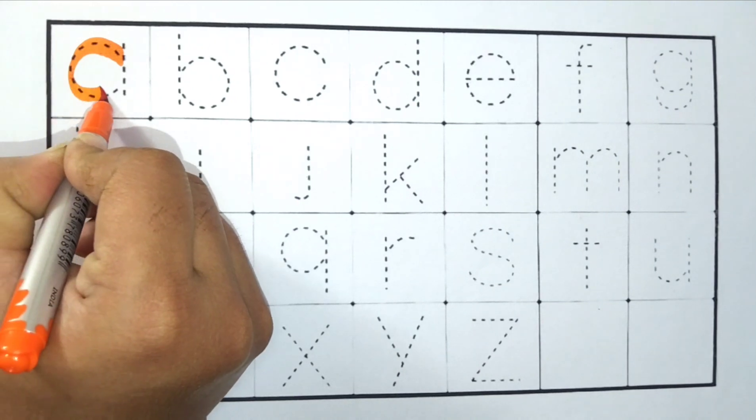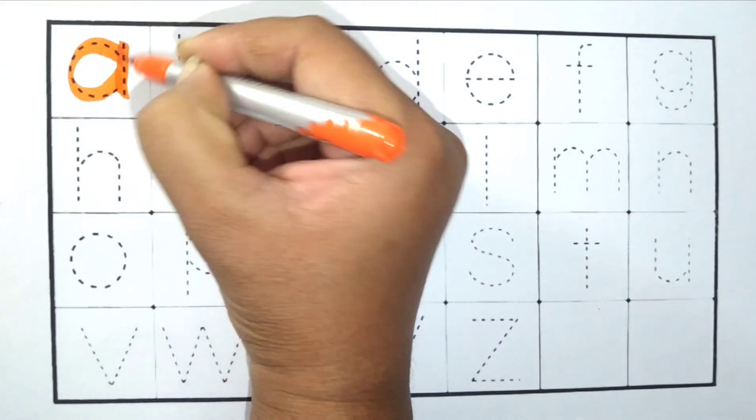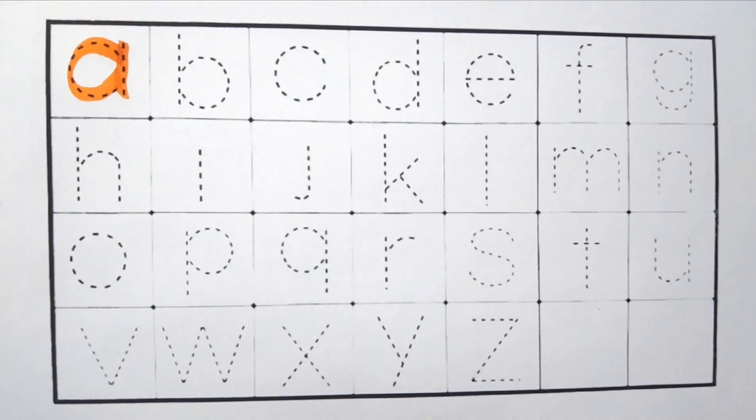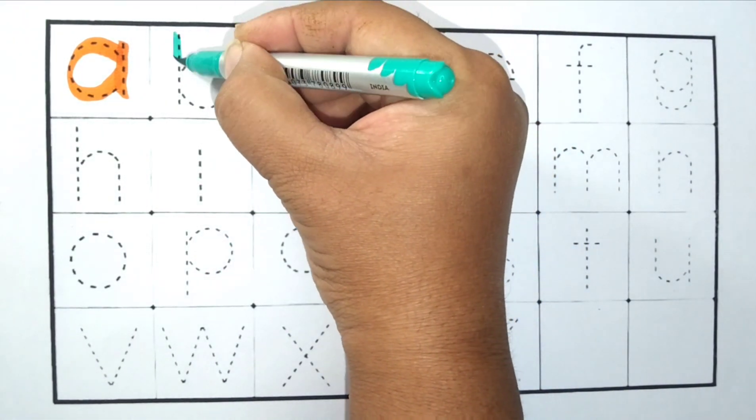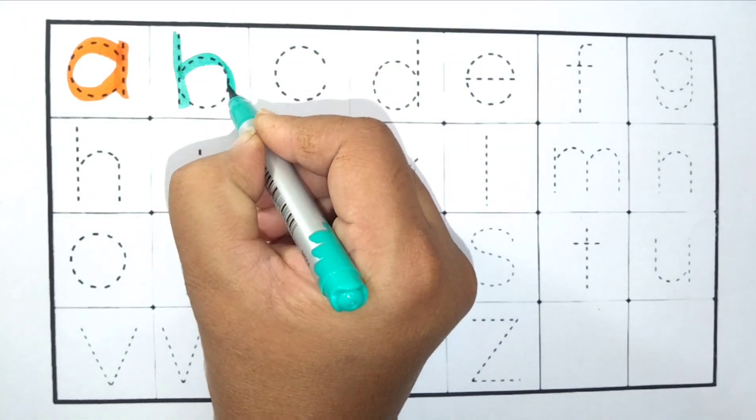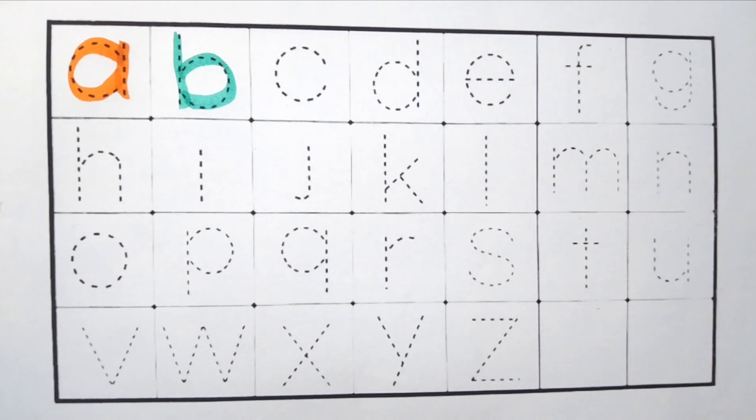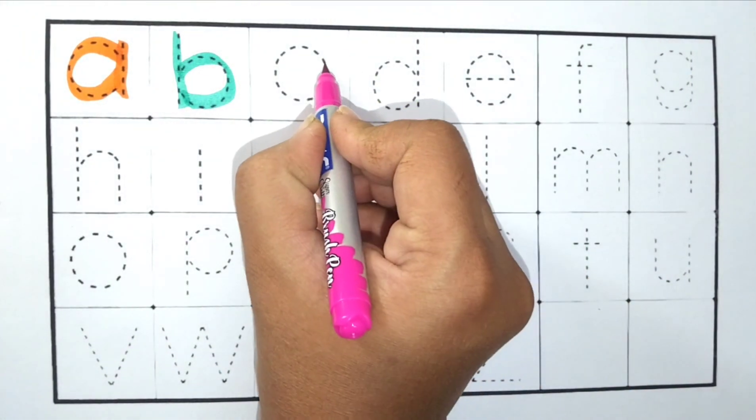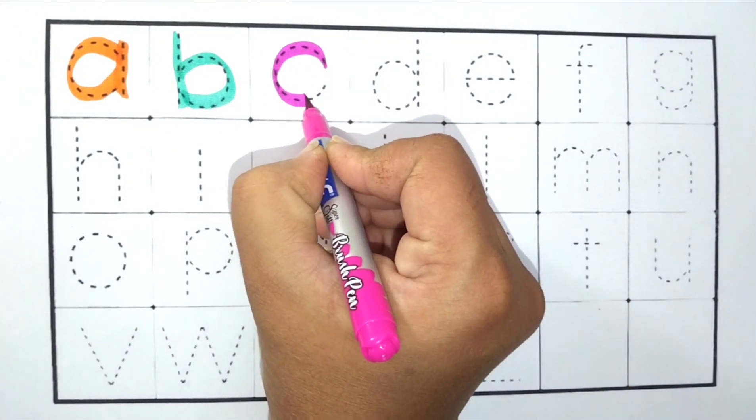Orange color. A for Aeroplane. Sea green color. B for Banana. Pink color. C for Cat.